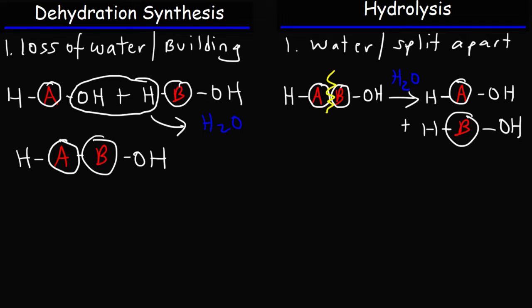In a dehydration synthesis reaction, you're taking small molecules, and you're building them together to form a large molecule. In hydrolysis, you're taking a large molecule, and you're using water to break it down into smaller molecules.